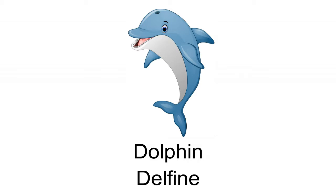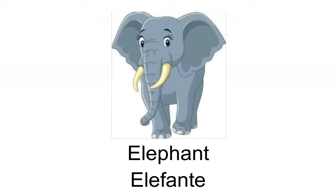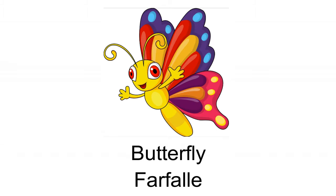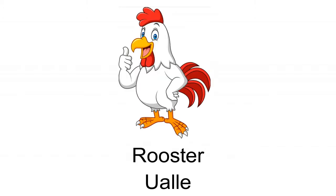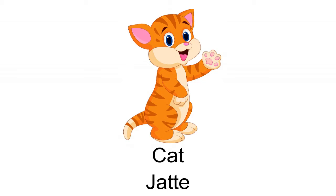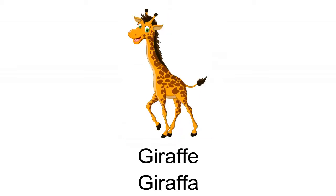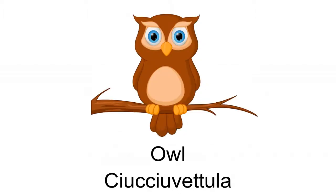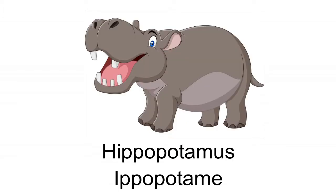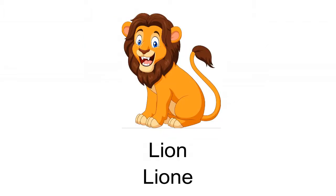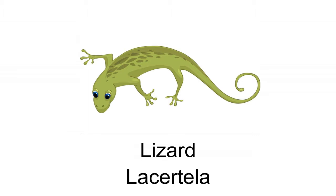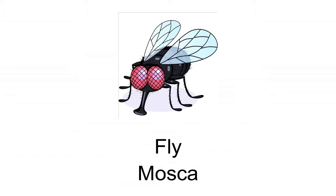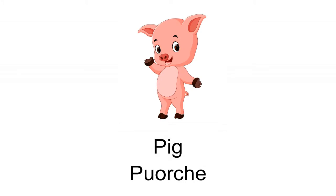Crow — Cornacchia. Hamster — Criceto. Dolphin — Delfino. Elephant — Elefante. Butterfly — Farfalla. Chicken — Gallina. Rooster — Gallo. Cat — Gatto. Giraffe — Giraffa. Cricket — Grillo. Owl — Cucciuvettola. Hippopotamus — Ippopotamo. Lion — Leone. Wolf — Lupo.